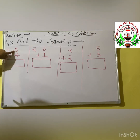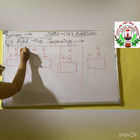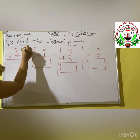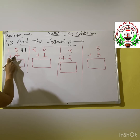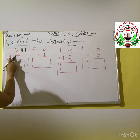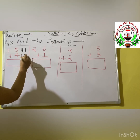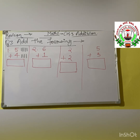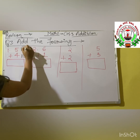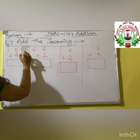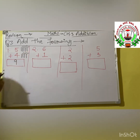Which number is given? 5. So we draw 1, 2, 3, 4 and 5 strokes. And here how many strokes do we draw? The number is 4 — so we draw 4 strokes: 1, 2, 3 and 4. Shall we count together? 1, 2, 3, 4, 5, 6, 7, 8 and 9. Our answer is 9.